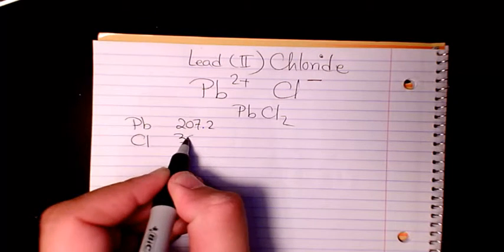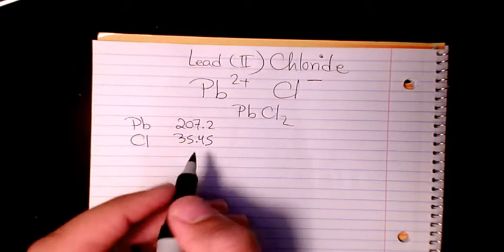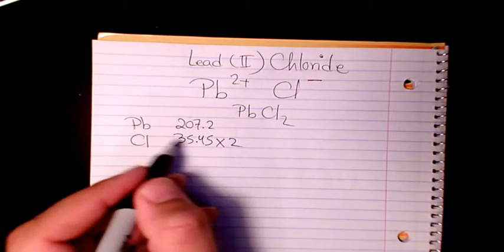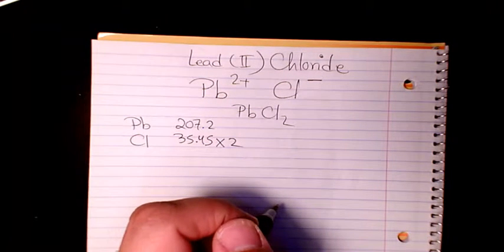So how many atoms of chlorine do we have? We have two of them. And how many atoms of Pb do we have? We have just one.